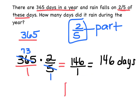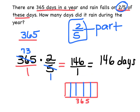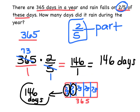Another way you could do this is draw a rectangle. You could say this whole rectangle is 365 days, and since I'm working with fifths, I would split it into fifths. If I did 365 divided by five, I get each part is 73. So each of these five sections is 73, and it rains on two-fifths of the days, so I take two of them: 73 and 73 equals 146 days. Either way will work — it's a little quicker just to multiply when you're finding part of a whole number. That's it for fraction story problems. Now you're going to try some.